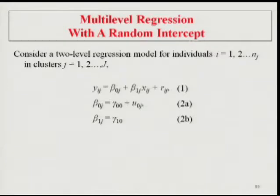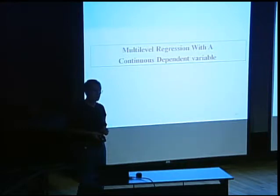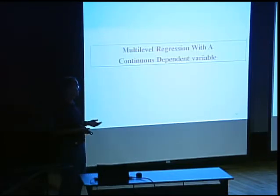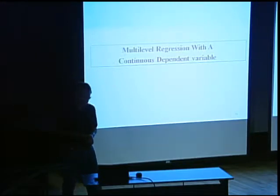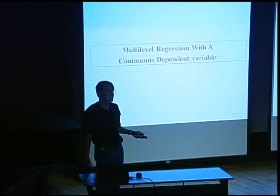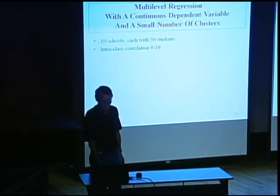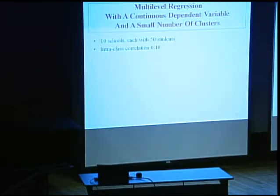The problem is that we often have studies with a rather small number of schools or clusters. We know from two-level analysis with maximum likelihood that parameter estimates, standard errors, chi-square tests, and model fit don't behave well with a small number of clusters. We usually recommend 30 to 50 clusters for good behavior. We can go down to 20, but what if you only have 10 schools? This is where Bayes shines.